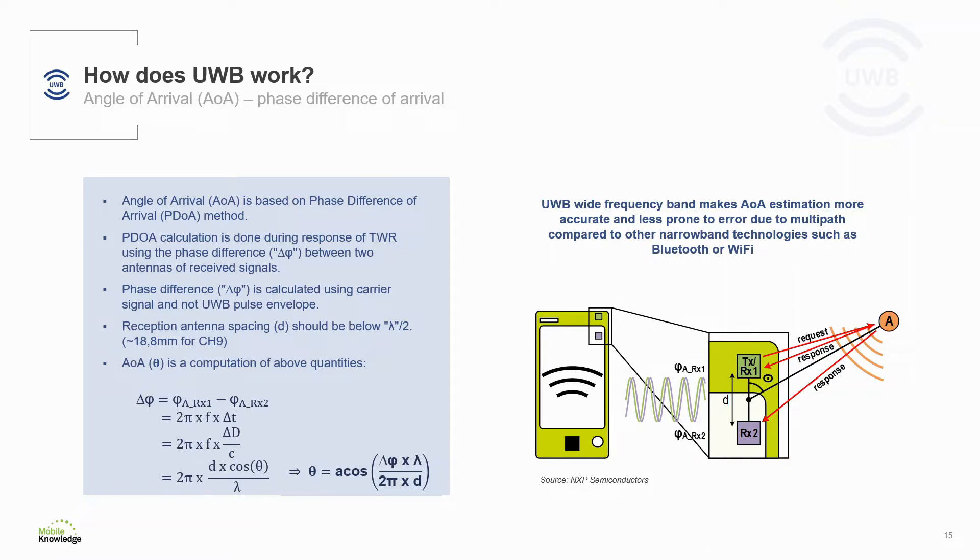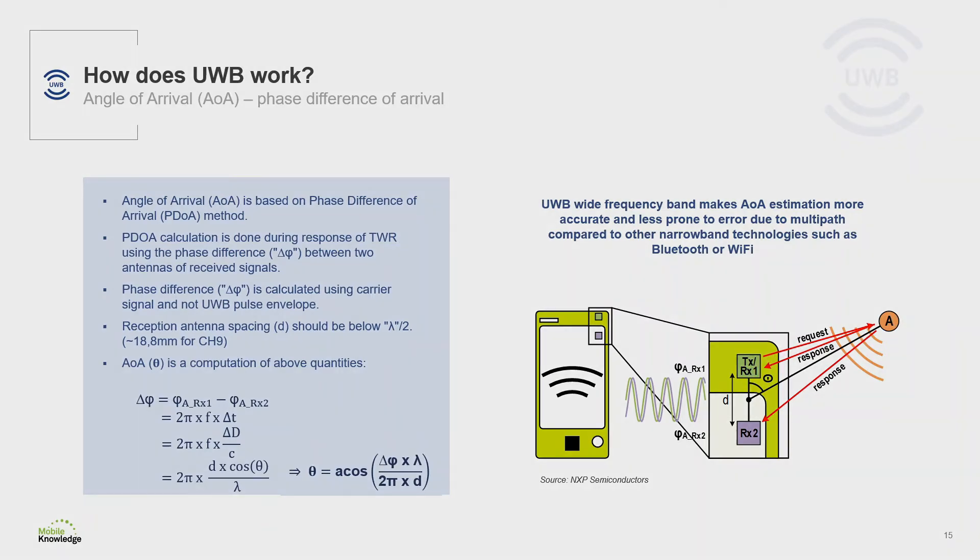For this, as you can see in the picture, we need two antennas placed at a distance below half of the wavelength. Then, we measure the phase difference of the ultrawideband carrier signal received by the two antennas. From this phase difference, we obtain the angle from which the response is received.